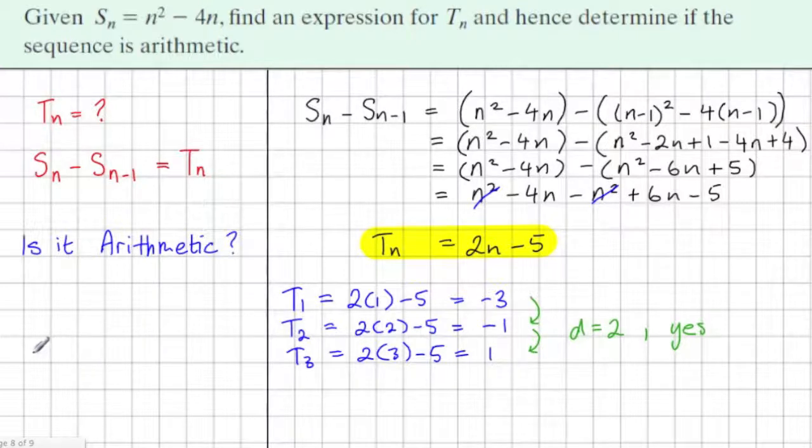A more formal proof of this would be to prove it for every term. So we're really asking ourselves, is term n plus 1 take away term n always going to give us a constant or a common difference?